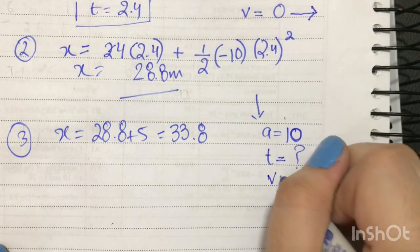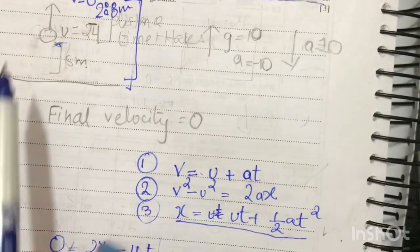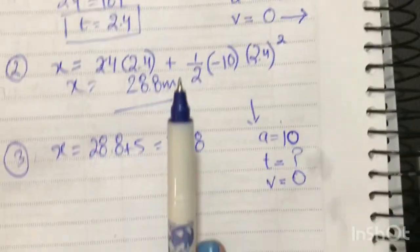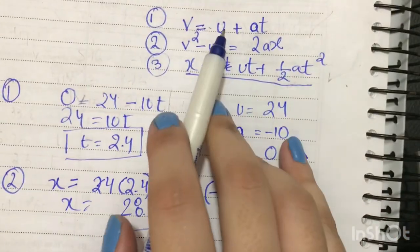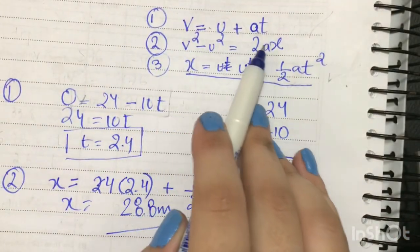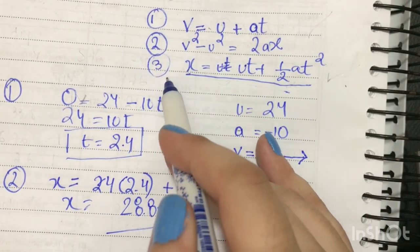And your initial velocity is 0 because remember you are starting from the top. So you will get the time. I will opt to choose this formula.